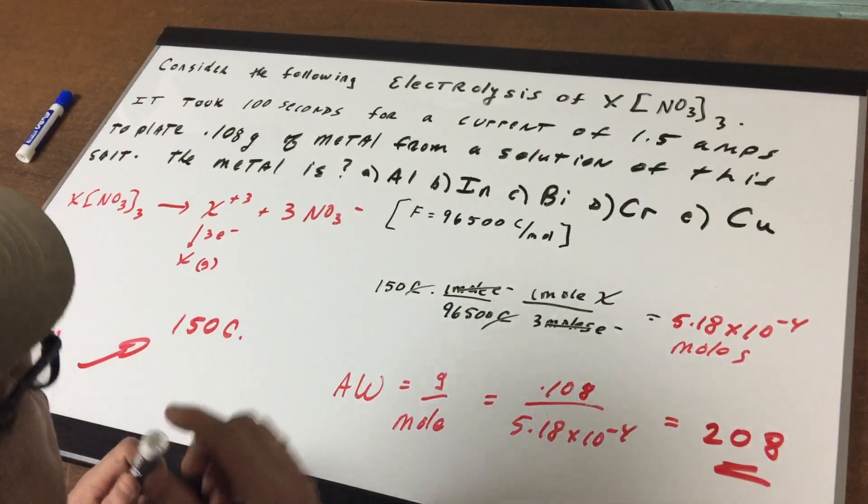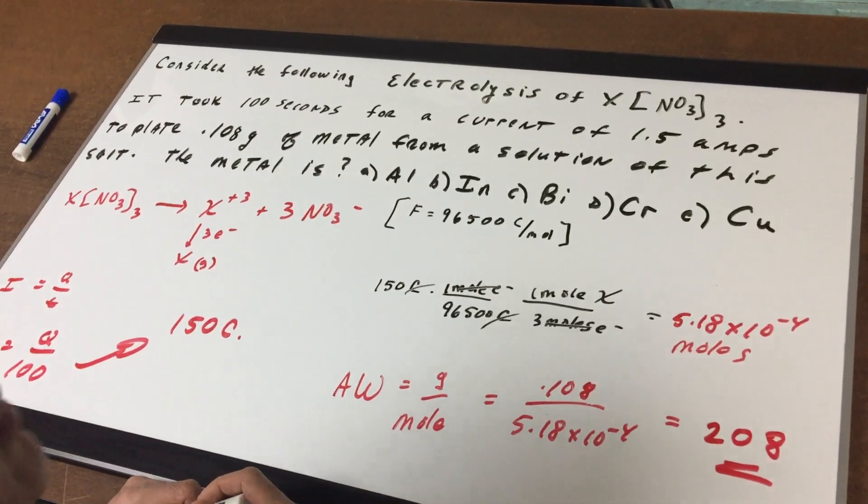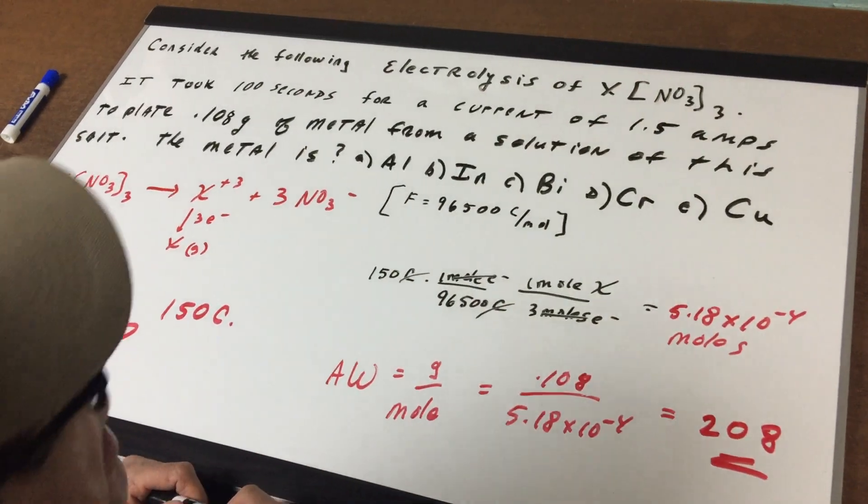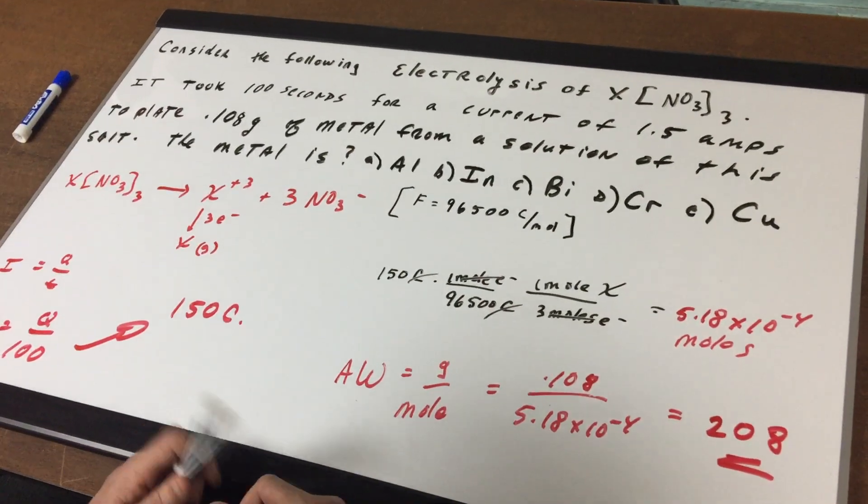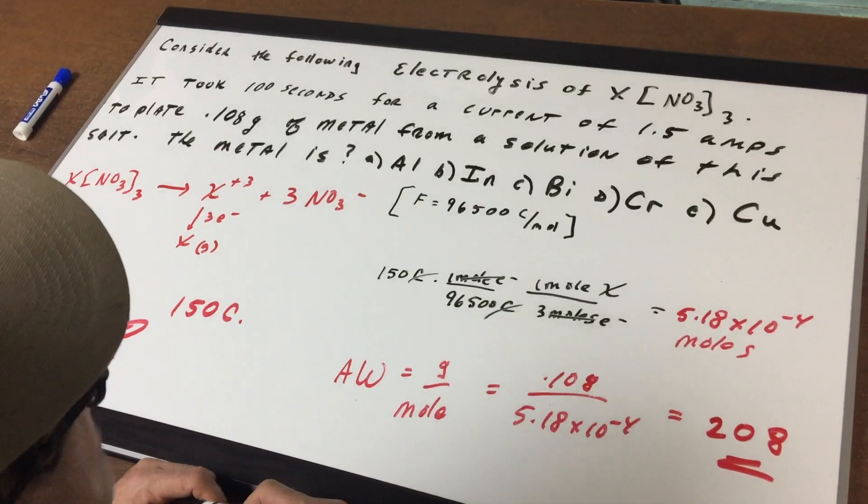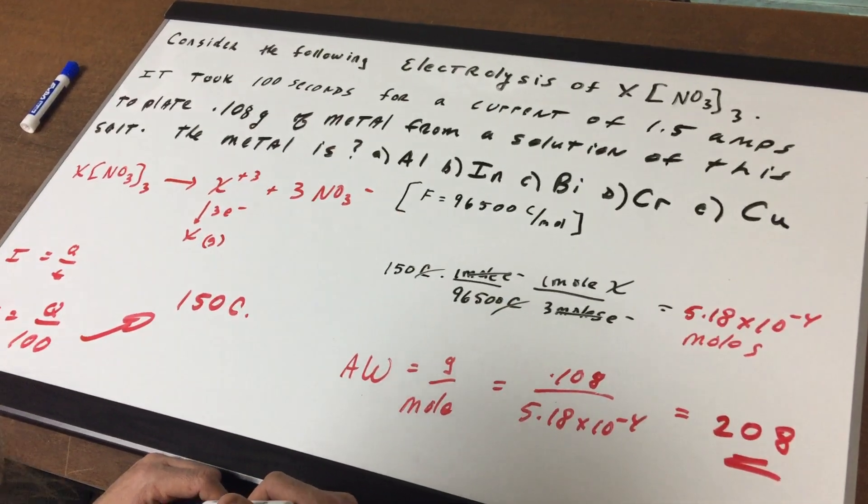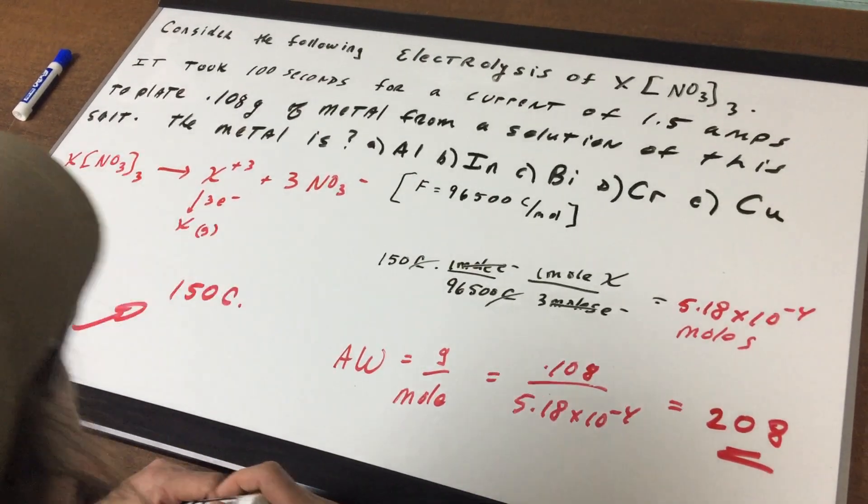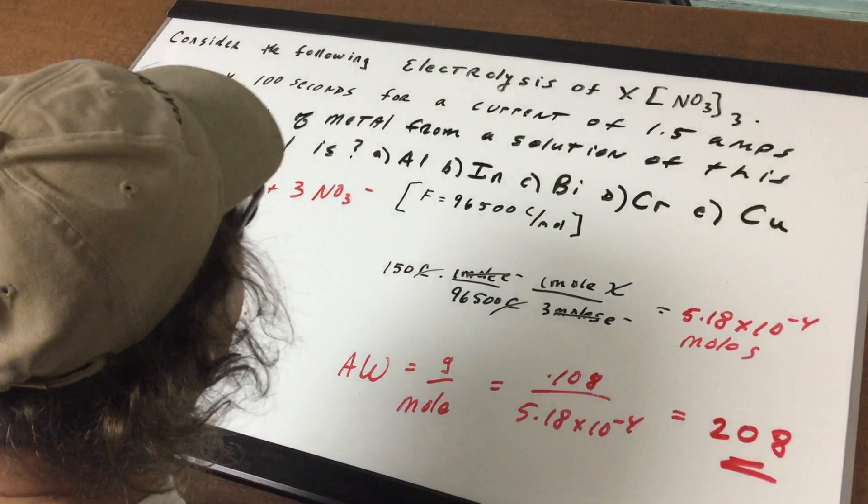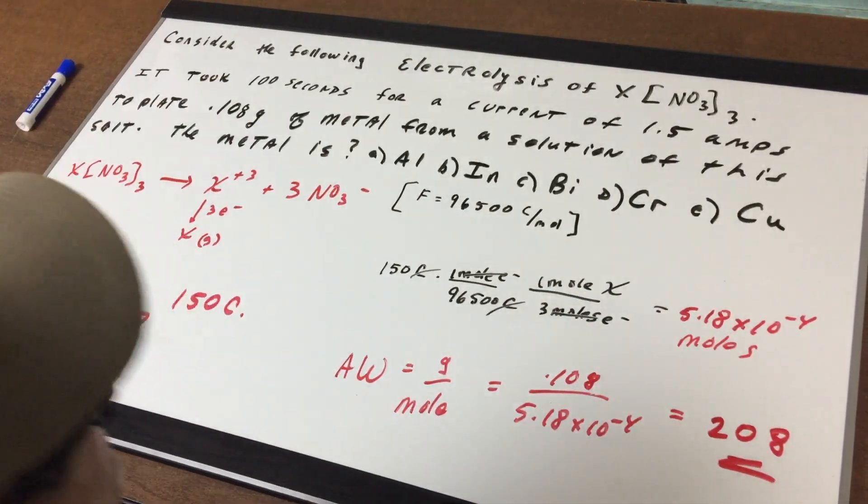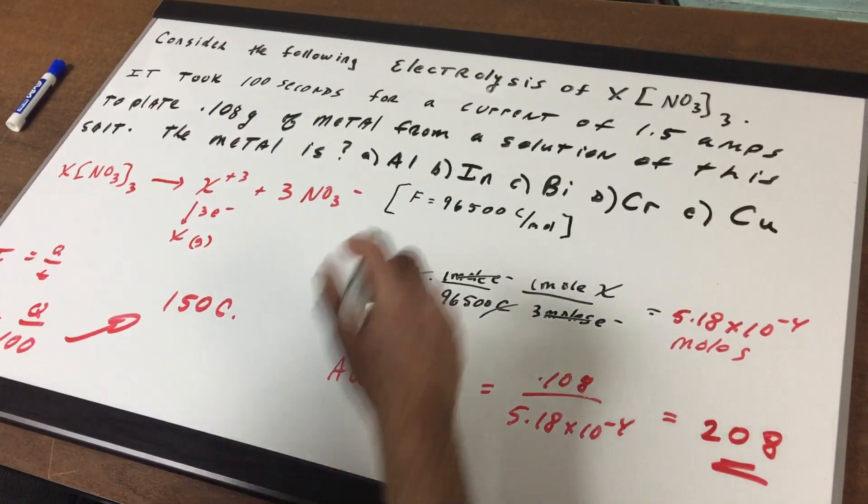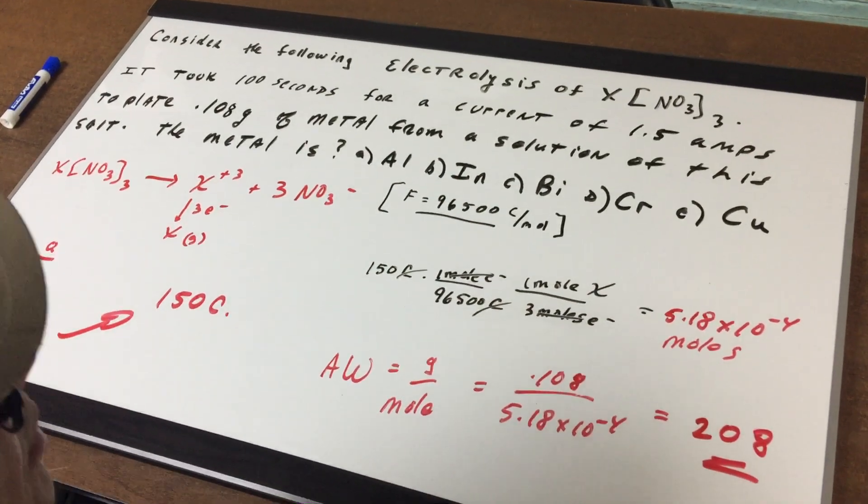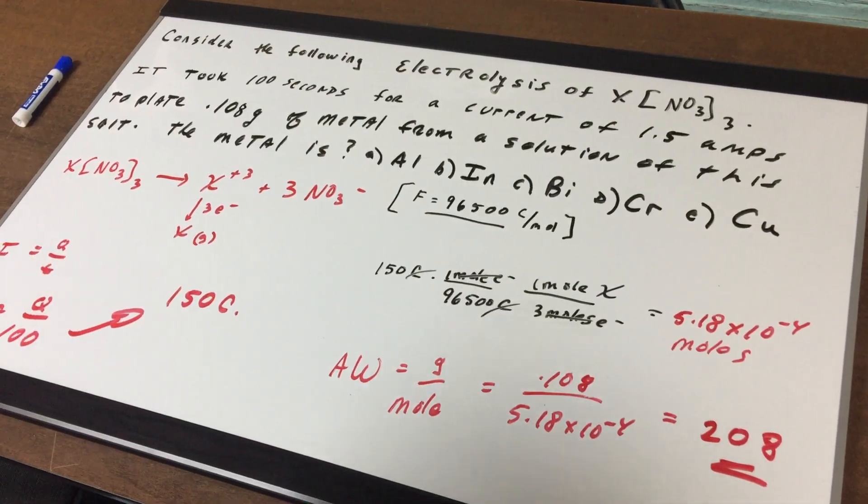It says, consider the following electrolysis of a salt. The salt has the general formula XNO3₃. It takes 100 seconds for a current of 1.5 amps to plate 0.108 grams of the metal from a solution of this salt. I want to identify the metal. Is it aluminum, indium, bismuth, chromium or copper? I give you the Faraday's constant, 96,500 coulombs per mole. So that's provided on the data exam.